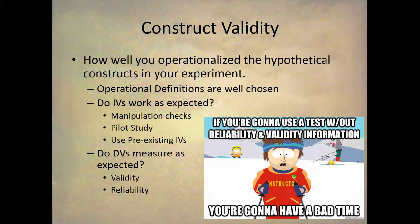With the independent variable, we want to know if the IV and its operational definition worked as intended. There are several ways you can do that. The first is a manipulation check — that is, you actually check to see at the end of the experiment whether or not people noticed or responded to the manipulation.